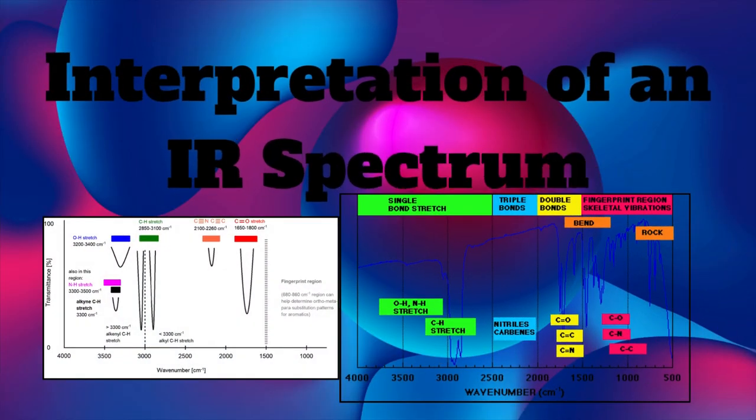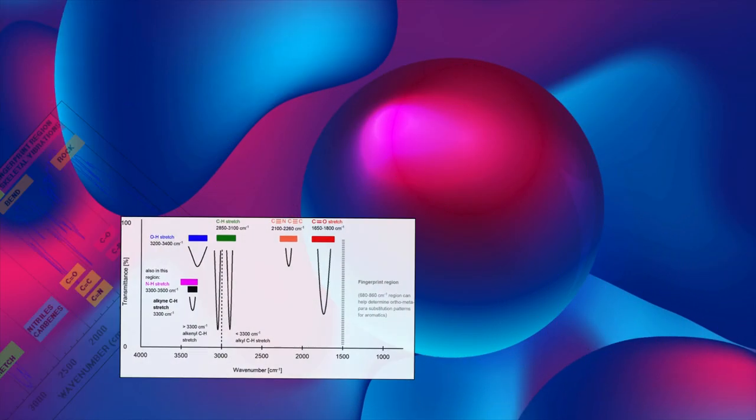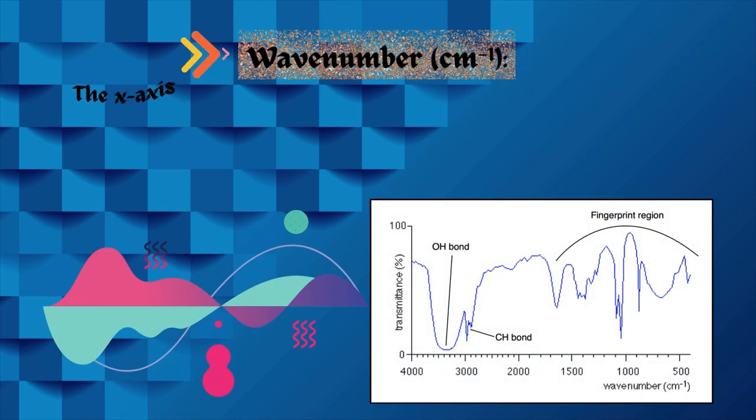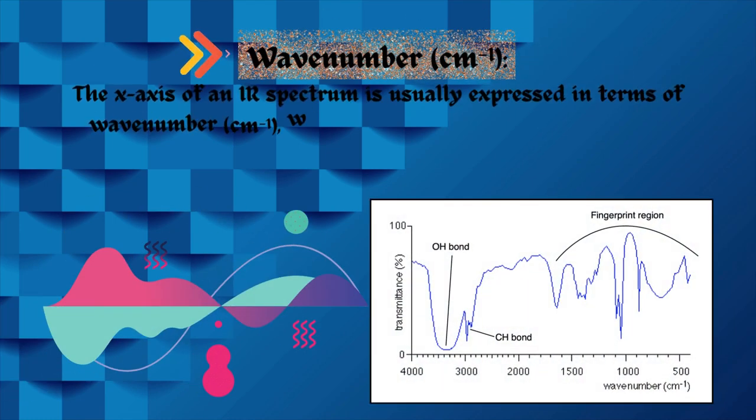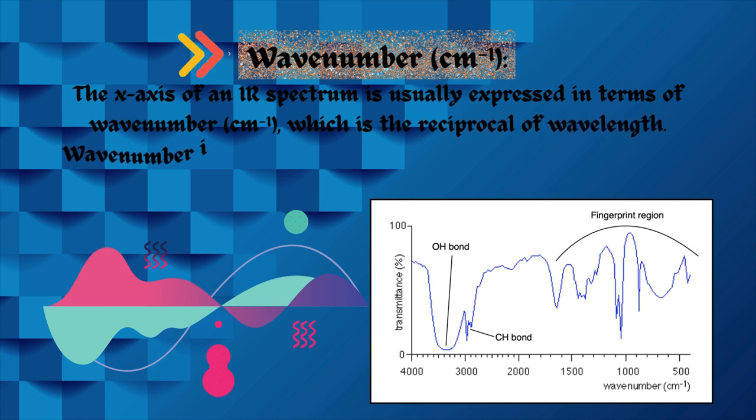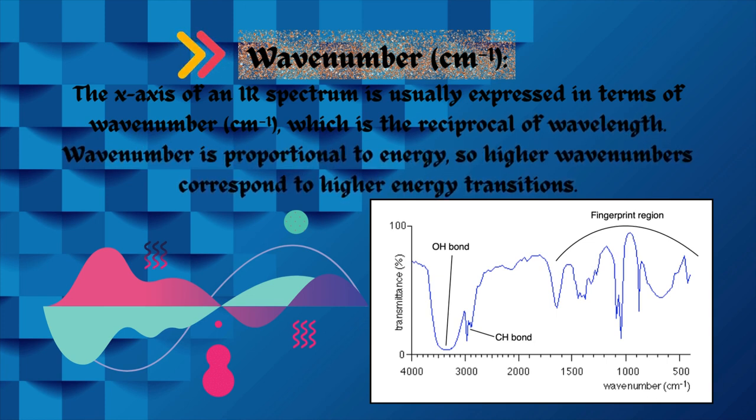Interpretation of an IR spectrum. Wavenumber per centimeter. The x-axis of an IR spectrum is usually expressed in terms of wavenumber per centimeter, which is the reciprocal of wavelength. Wavenumber is proportional to energy, so higher wavenumbers correspond to higher energy transitions.